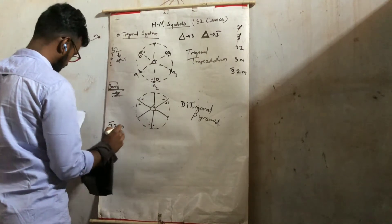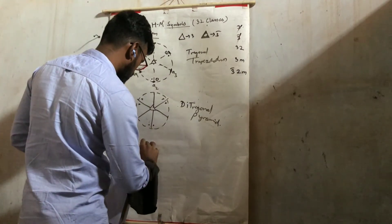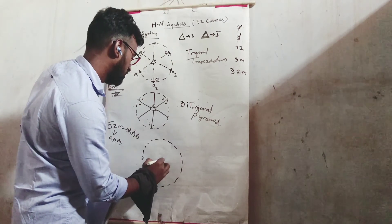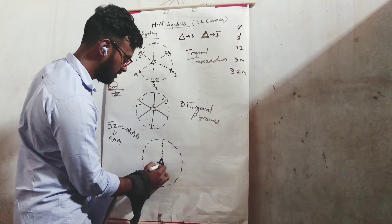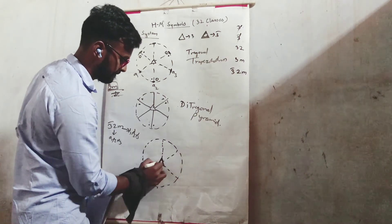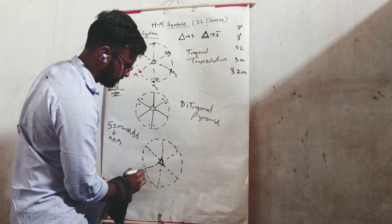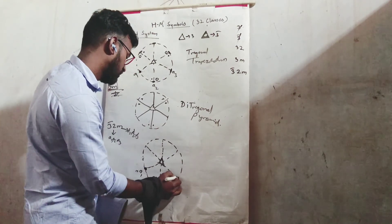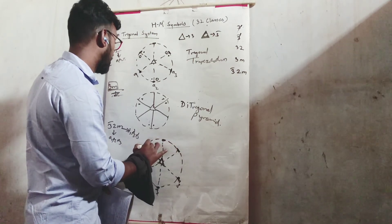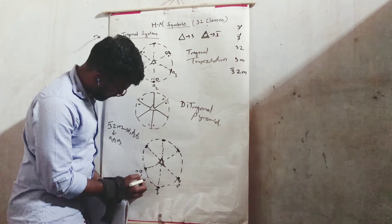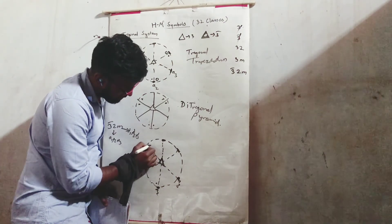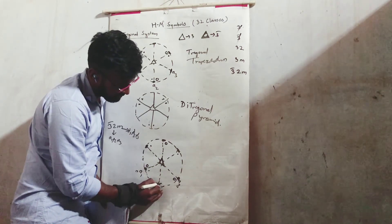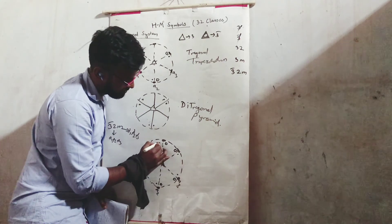Now 3-bar 2M. We will have the 3-bar operation: dot, lowering to the lower hemisphere gives circle, then dot, circle, dot, circle. Now the 2-fold operation: circle, dot, dot, circle. Circle, dot, dot, circle.